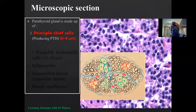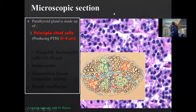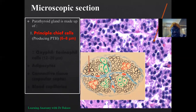The first type is the principal cell, or the chief cell. These are the cells responsible for the production of the parathyroid hormone, PTH. You can see they are well distributed within this microscopic section — this is one of the chief cells. They are the producing cells; they produce the hormone of the parathyroid gland. In the handmade section, they are highlighted in black and you can see them all over the place.